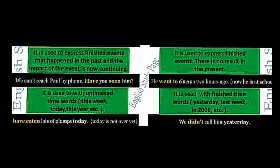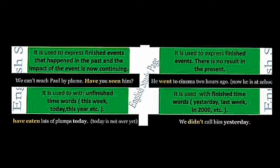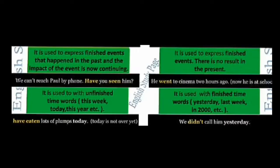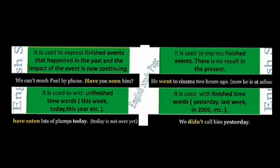जैसे कि 'He went to cinema two hours ago.' Means कि वो दो घंटे पहले ही जा चुका था। तो जा चुका था — अब उसका कोई भी effect हमें नहीं दिख रहा है, इसलिए यहाँ पर Simple Past का use होगा।